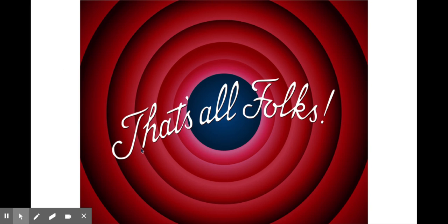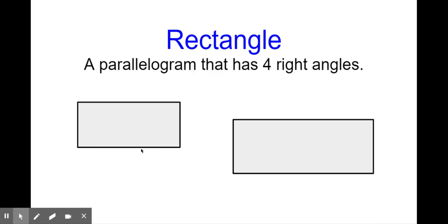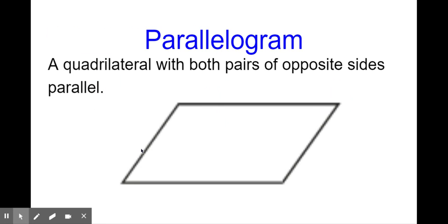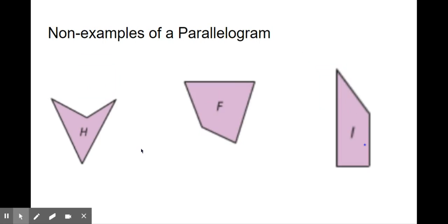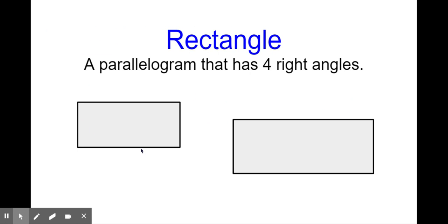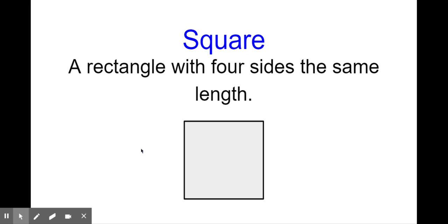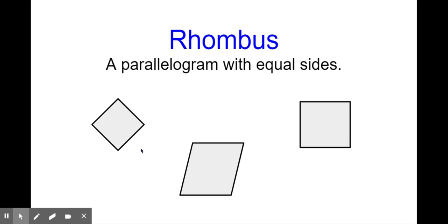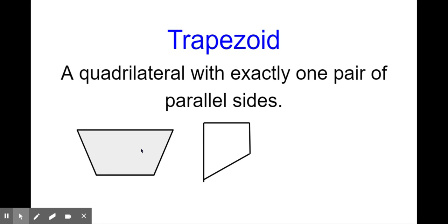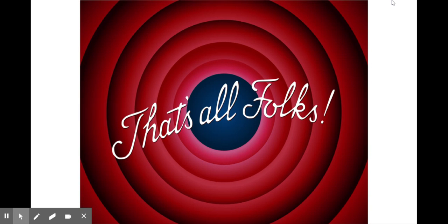That's all folks — short and sweet today. I hope you have an awesome Monday. Let's quickly review: a parallelogram is a quadrilateral with both pairs of opposite sides parallel. A rectangle is a parallelogram with four right angles. A square is a rectangle — the only difference is it has four sides of the same length. A rhombus is a parallelogram with equal sides. And a trapezoid is a quadrilateral with exactly one pair of parallel sides. Have an awesome day, third grade. I will talk to you Wednesday.